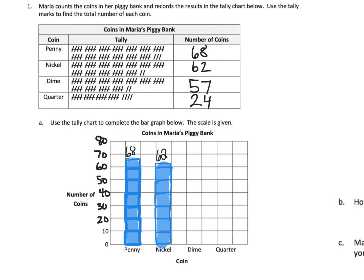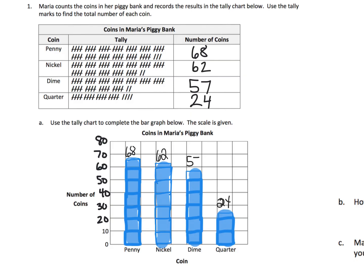For 57 dimes: that's 10, 20, 30, 40, 50 — and 57 means 7 is going to be almost to the top of that box but not quite. There's our 57. And lastly, 24 quarters: 10, 20, and then the 4 is going to be almost half but not quite. There's our 24.